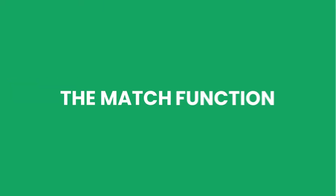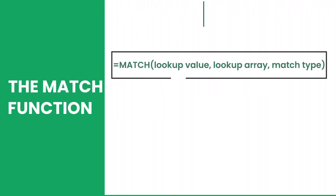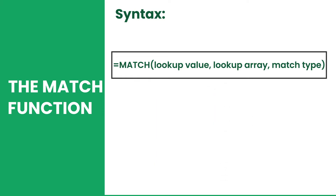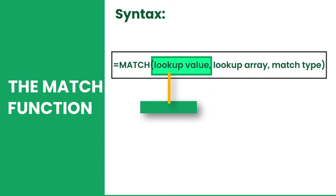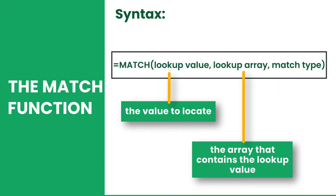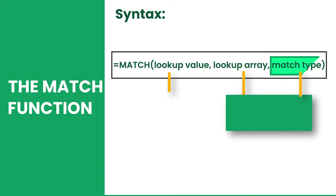On the other hand, MATCH searches for a specific value in a range and returns the relative position of the value in the range. MATCH has three arguments: lookup value, lookup array, and match type.